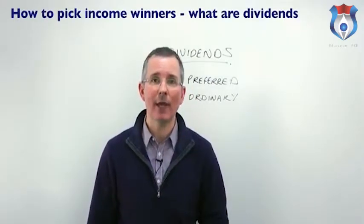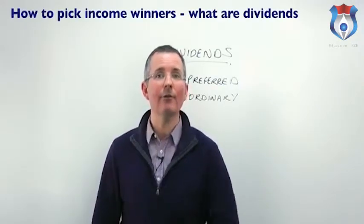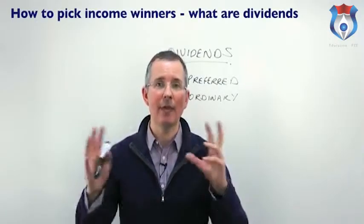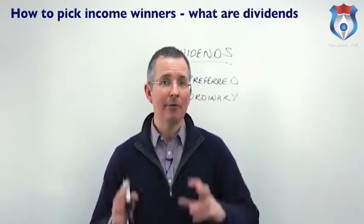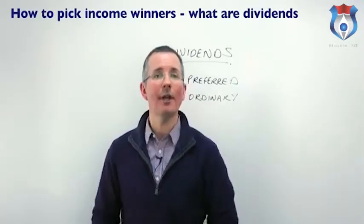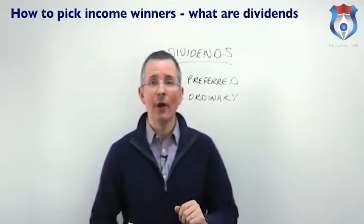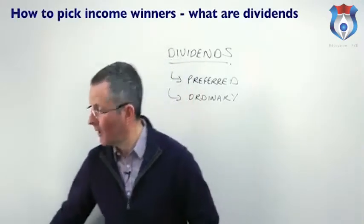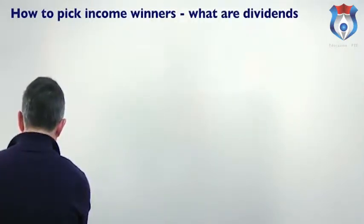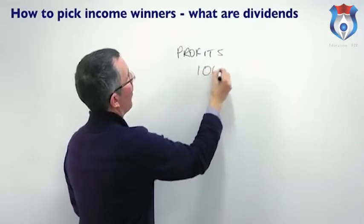Who decides how much money a particular share will pay out as a dividend? The answer is the directors of that company. You as a shareholder get the chance to vote in favor of the payment at the annual general meeting. But it's the directors who determine the size of the ordinary dividend, and it's only paid out once the directors have covered other costs like interest on bank loans and overdrafts. This represents an allocation of the total profit the company has made for the last financial year. For example, if a company makes profits of £100 million sterling...